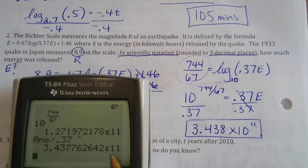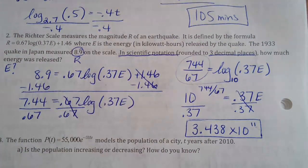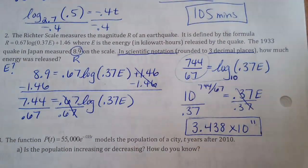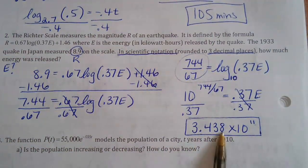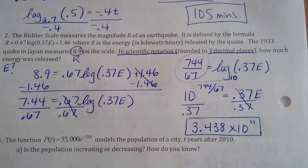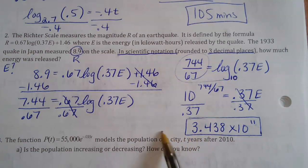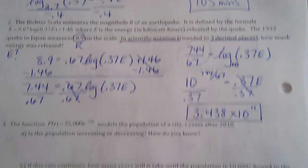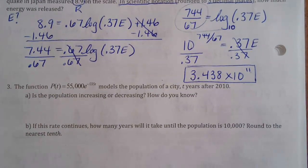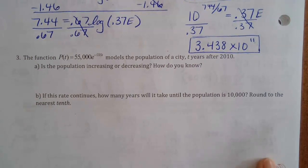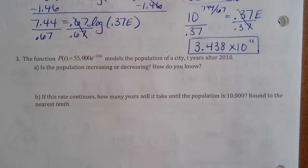So the answer is 3.438 × 10^11 — that's how much energy was released in the 1933 Japan earthquake. The E11 means times 10 to the 11th power, and the three decimal places come from normal rounding. If you ever see a negative exponent like E-11, that means a very small number with the decimal swinging 11 places the other way.